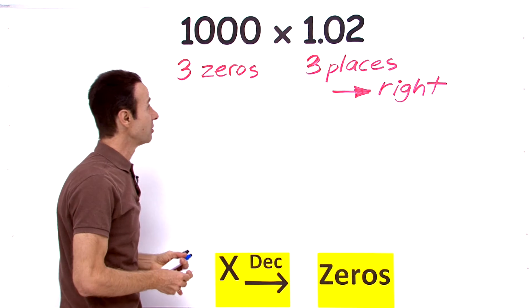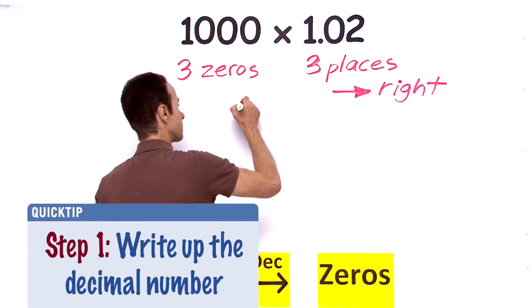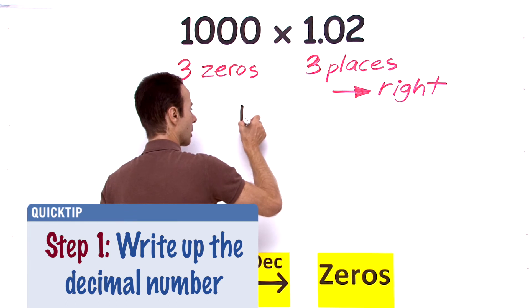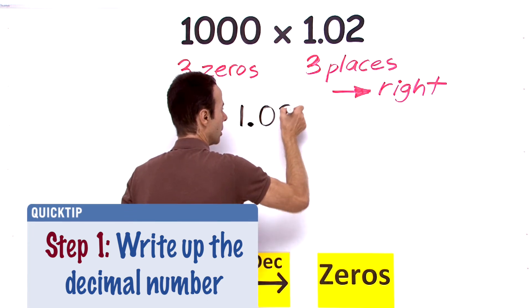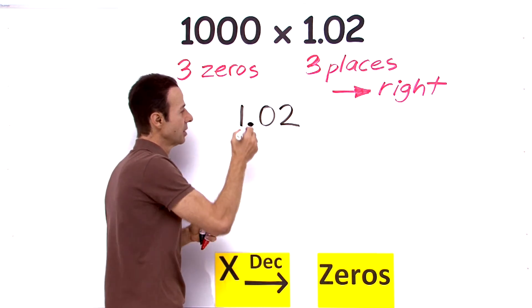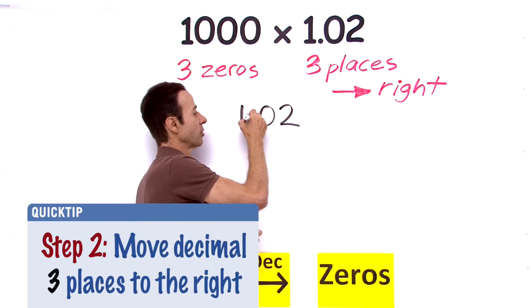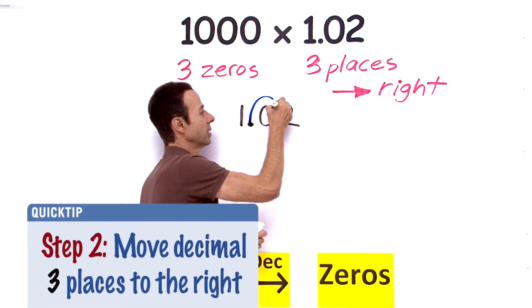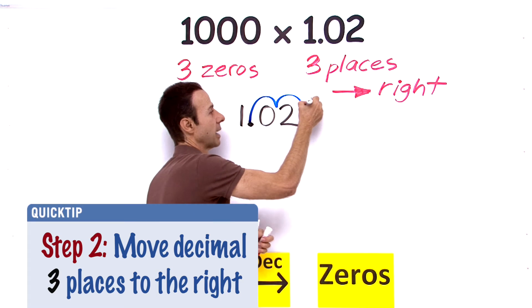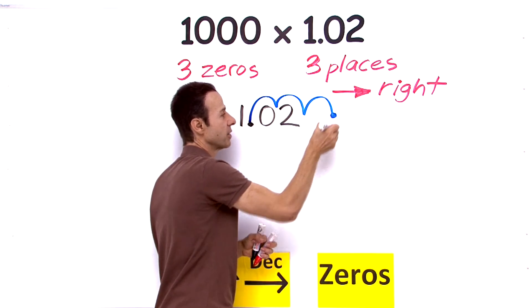So let's go ahead and do that. We take this 1.02 and we are going to move to the right. So we start here with the existing decimal point and we move to the right. Let's go one, two, and in fact one more—I mean three decimal places. That is, three goes right over there.